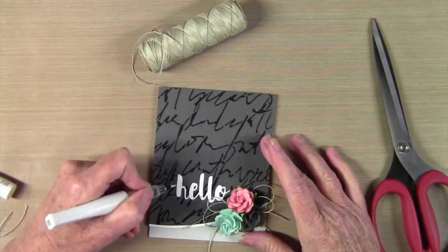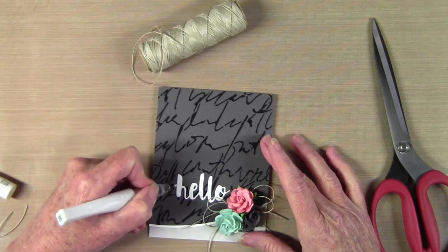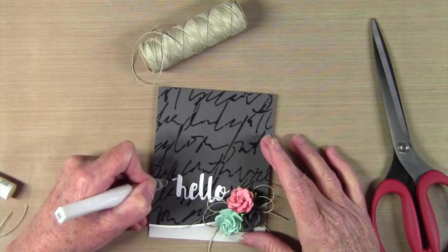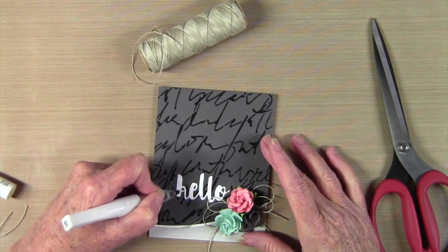And to add a little shimmer to my Hello, I'm using my Winkistella clear pen, and just kind of running over the letters. And this will look really nice against the iridescent radiant color from the background.